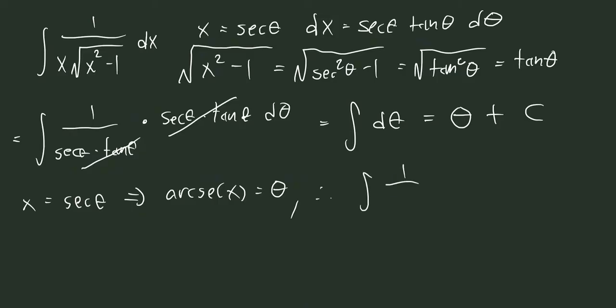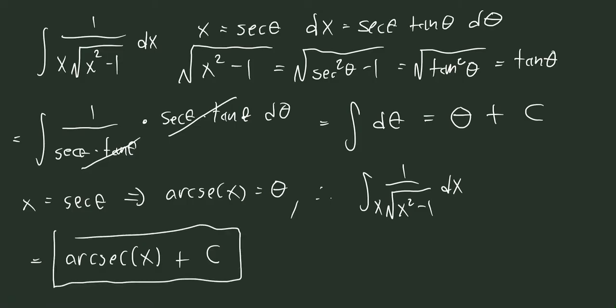So therefore, the integral of 1 over x times the square root of x squared minus 1 dx is equal to the arc secant of x plus a constant. And this is the final answer. Thank you for watching.